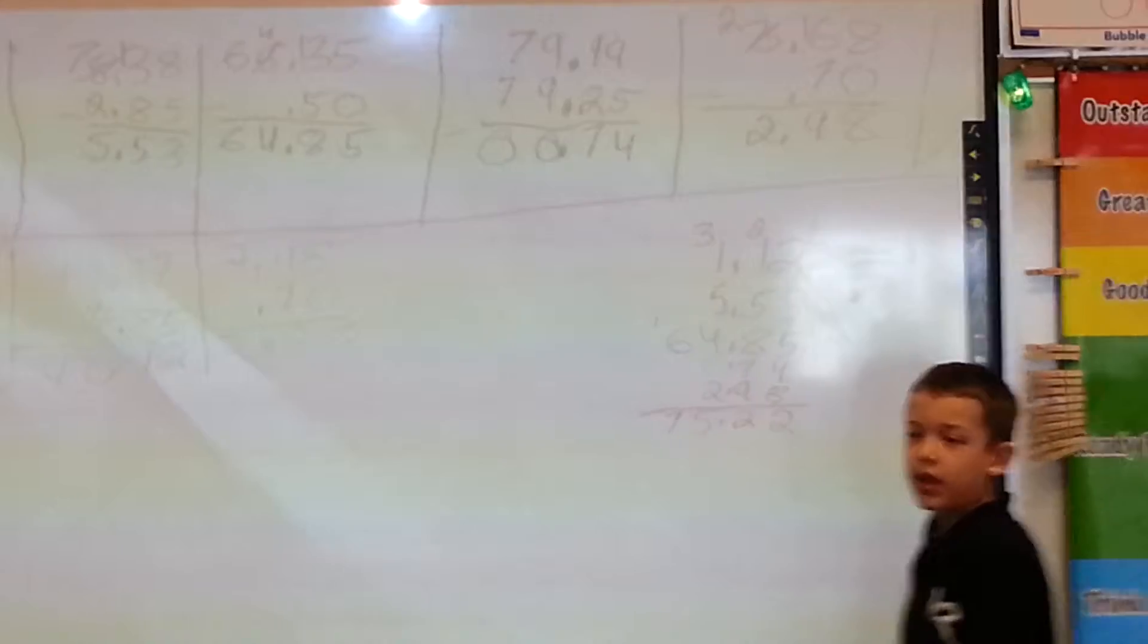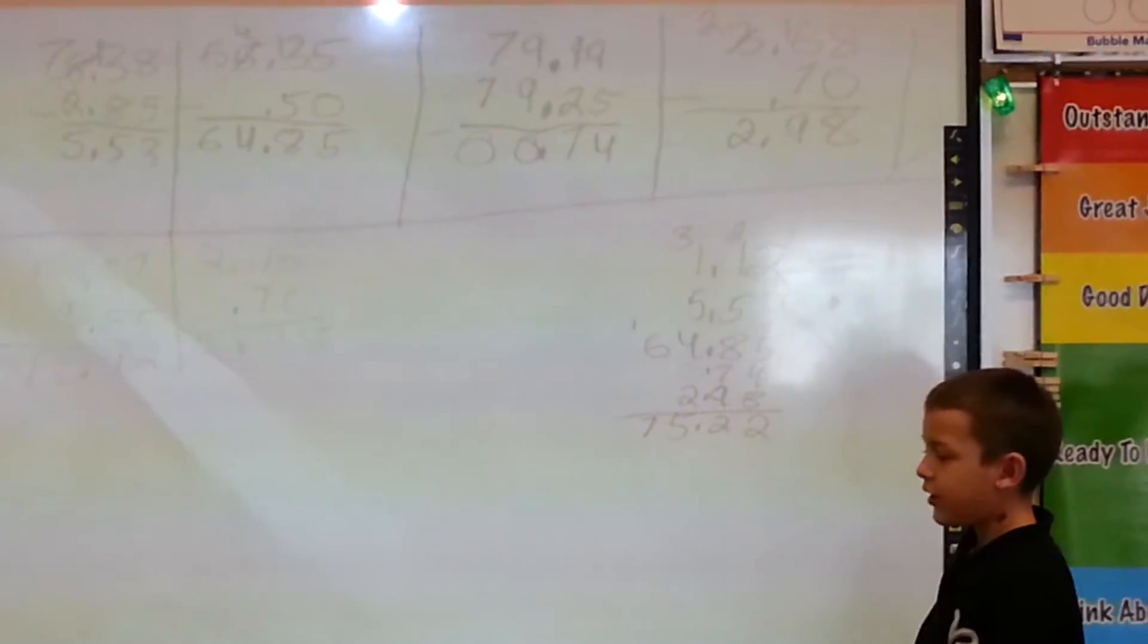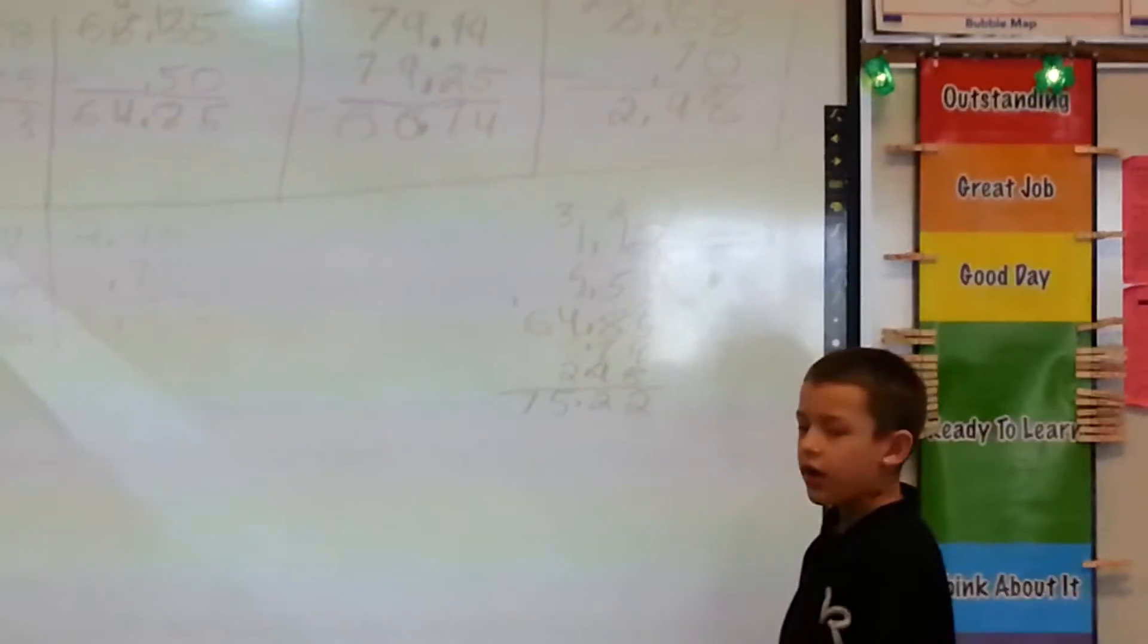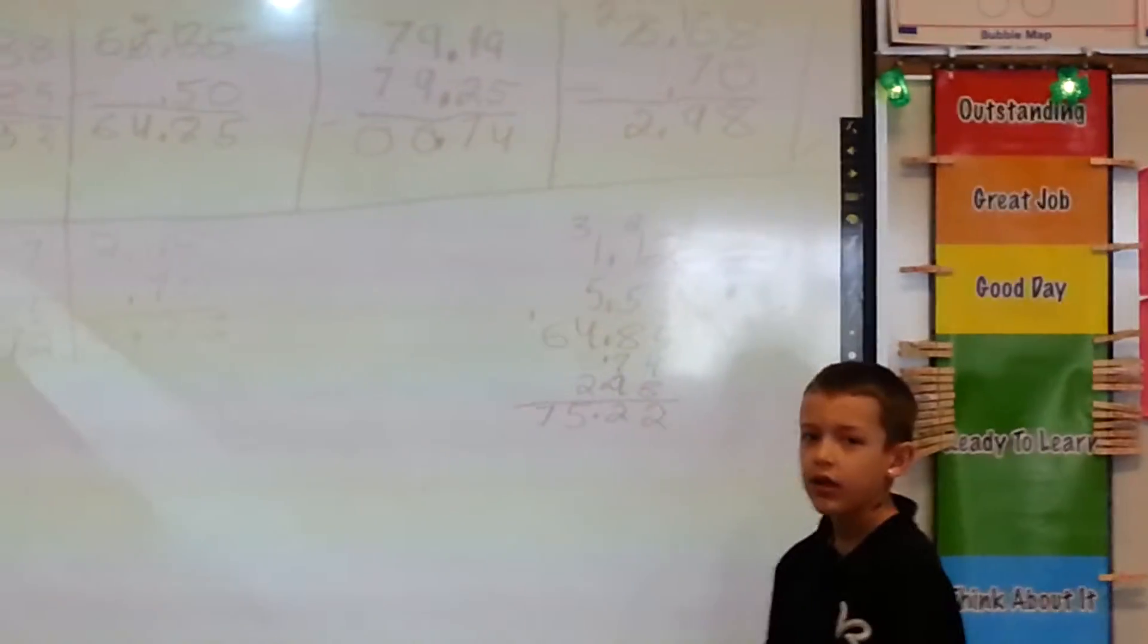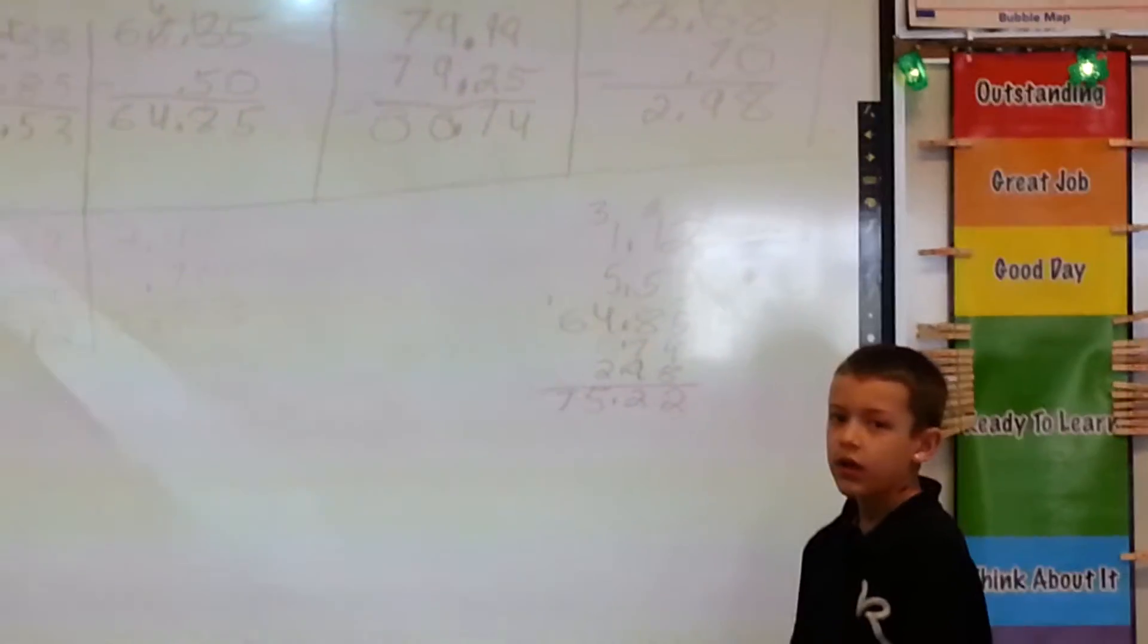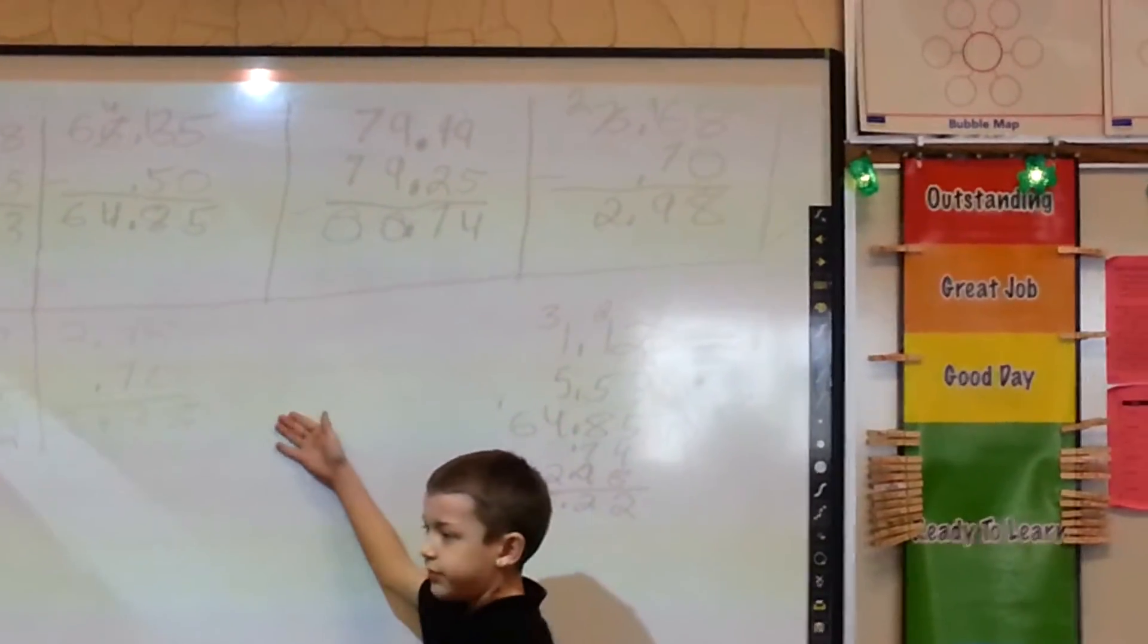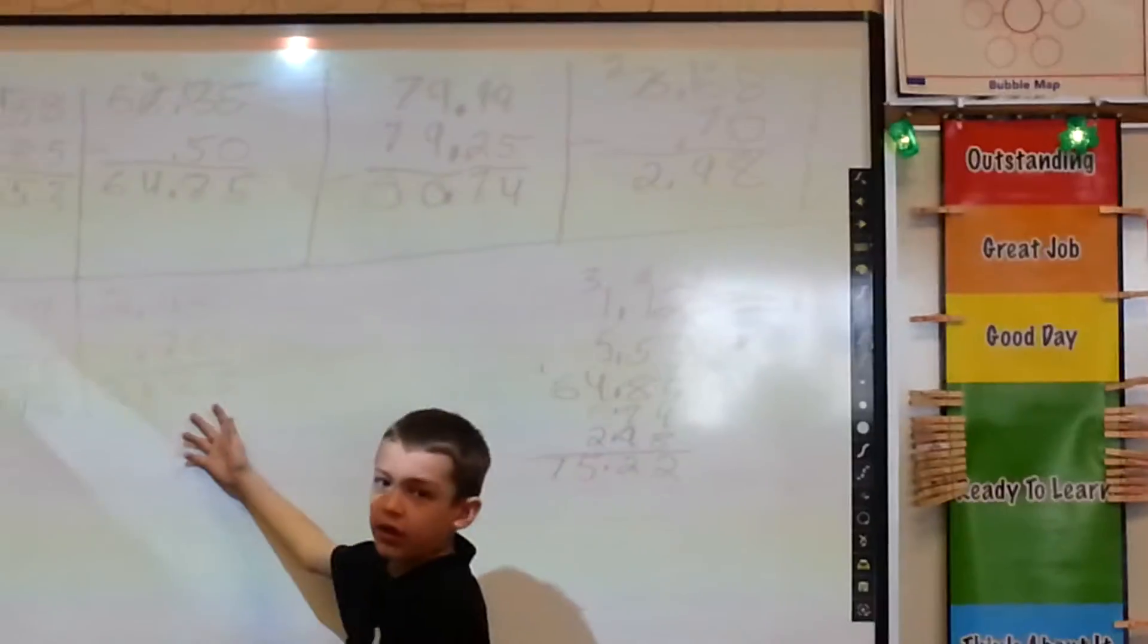And what does that represent? It represents like... Well, just think about what you did. So when you pulled those prices down, that $1.12 and the $5.53, where did you get those numbers from? I got those numbers... The top one I got from the online shopping. Right, so that's the original price.